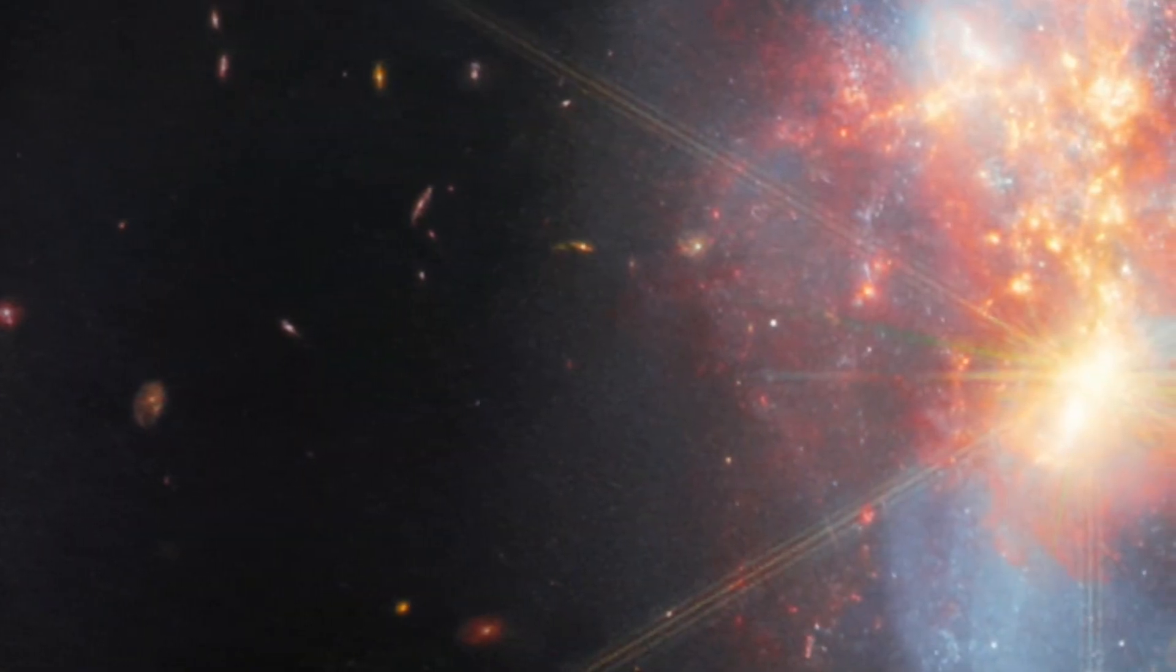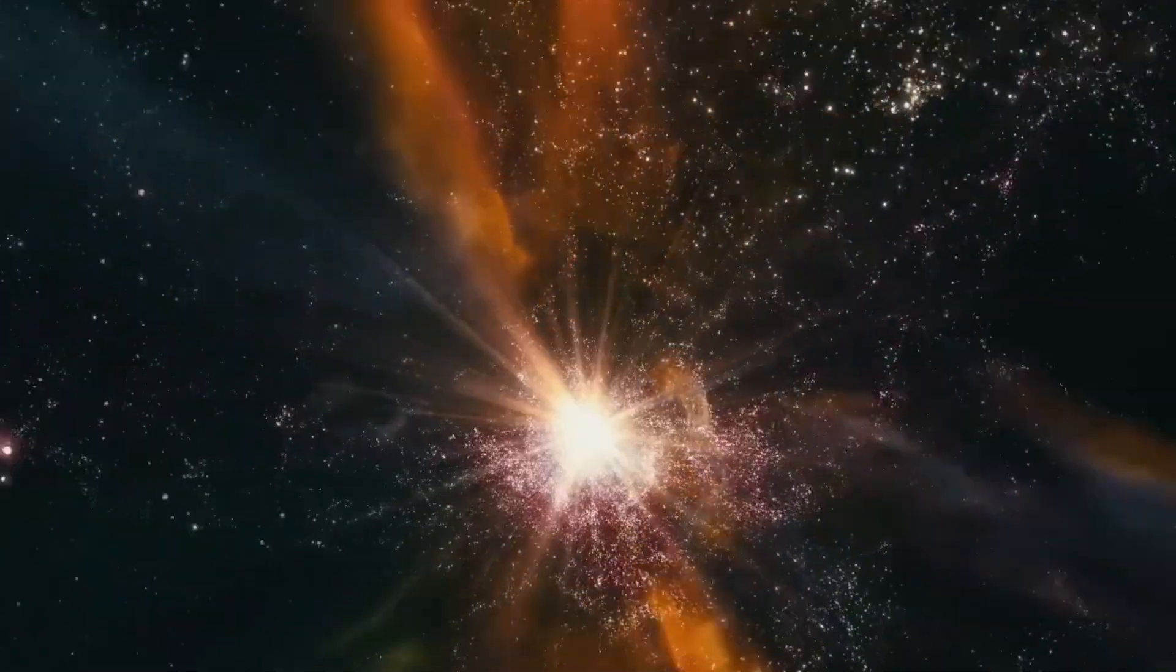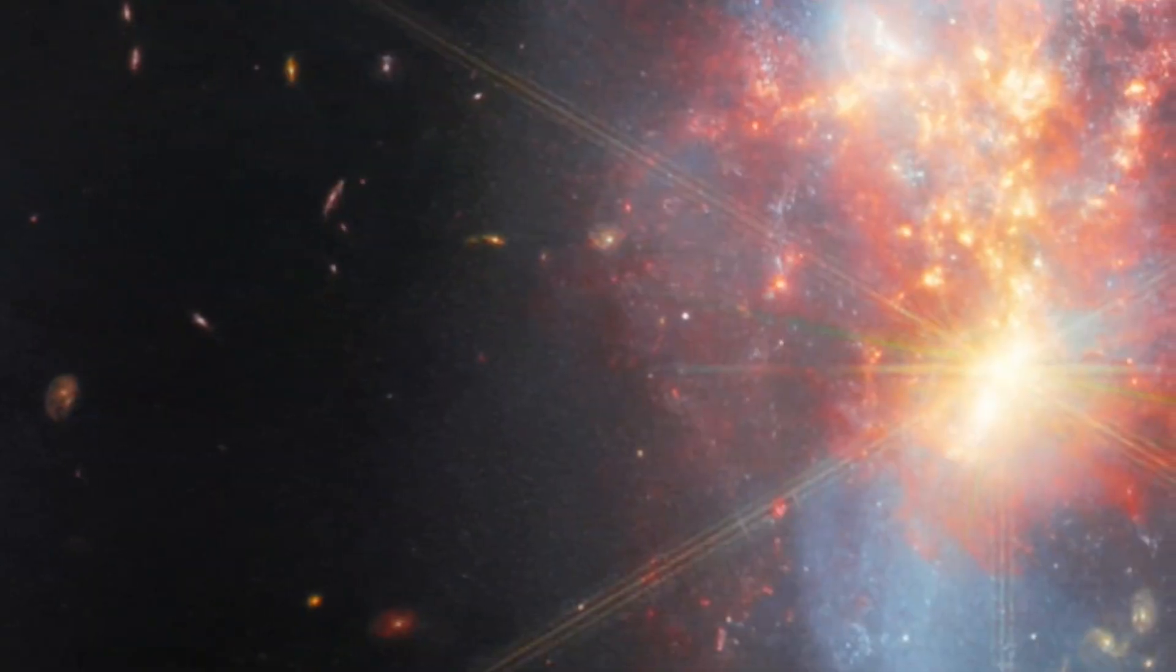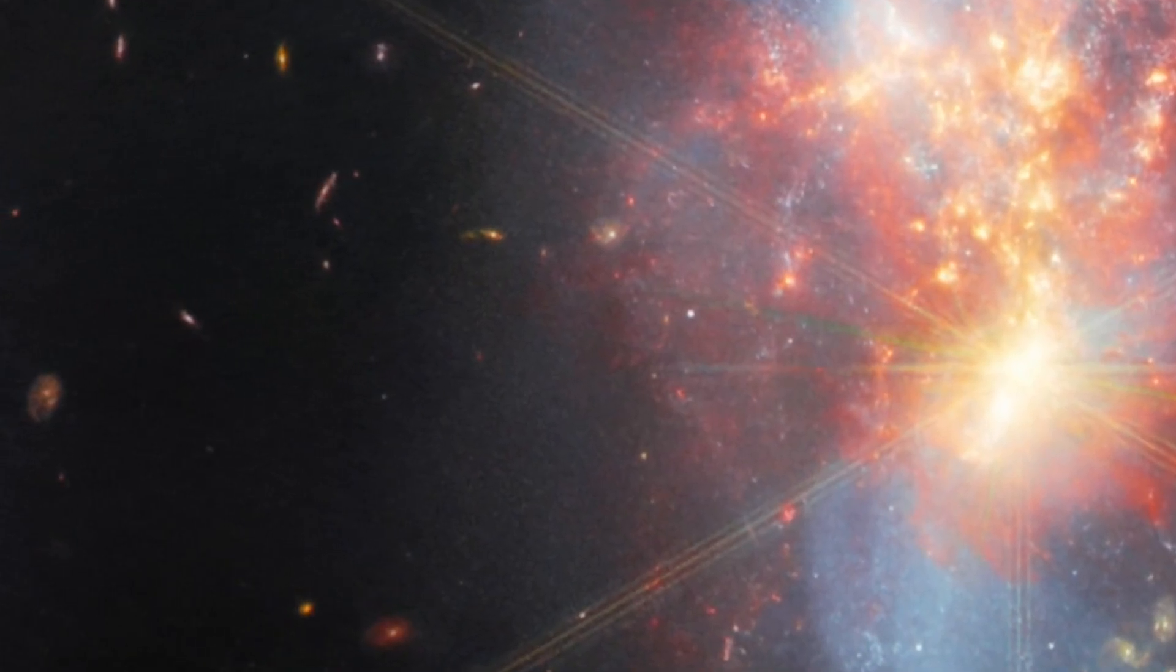This part of the image was hidden from the Hubble Telescope by a thick layer of dust. Webb's special power allows it to see things that were previously hidden, helping us learn more about the amazing processes happening in space.